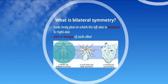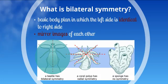What is bilateral symmetry? It's a basic body plan in which the left side is identical to the right side. So if you cut the animal in half, the left side is a mirror image of the right side, and it can be seen here in the beetle, which has bilateral symmetry.